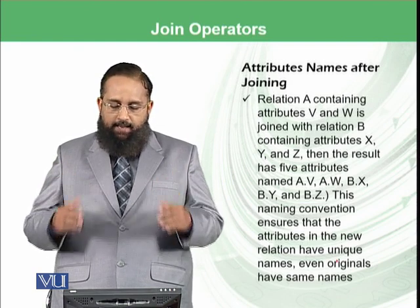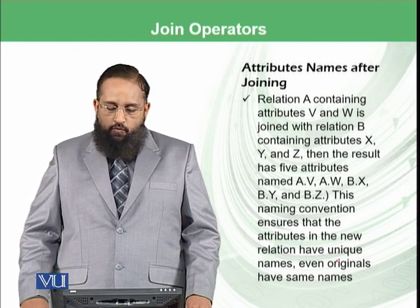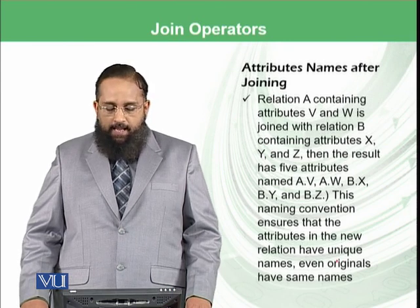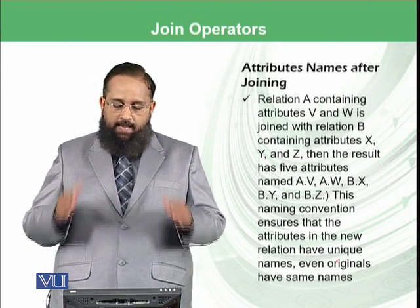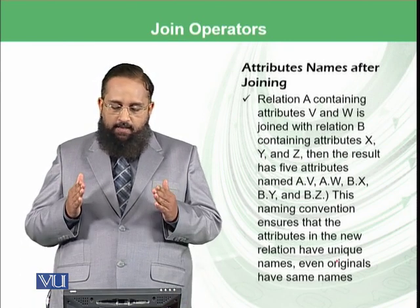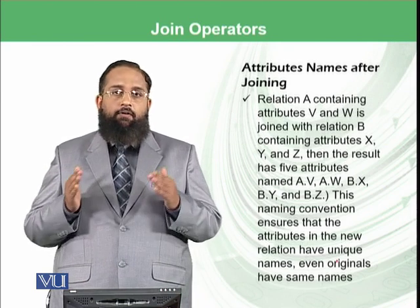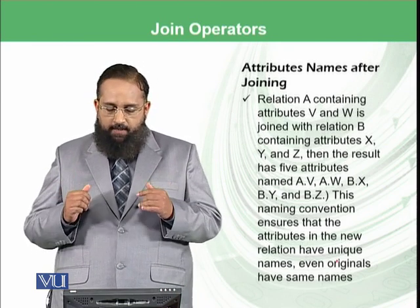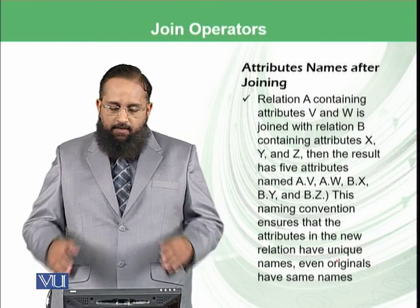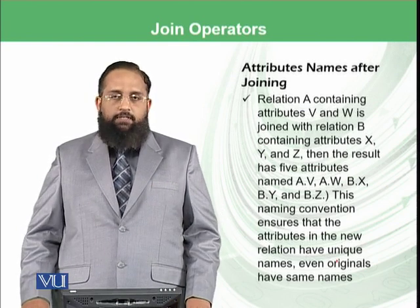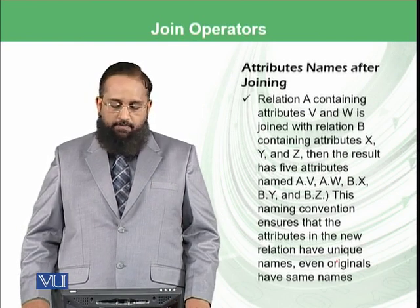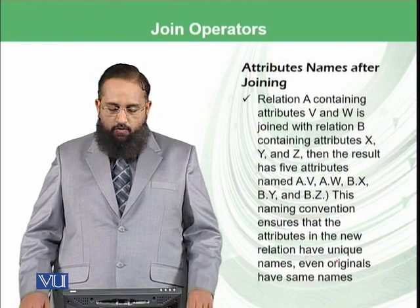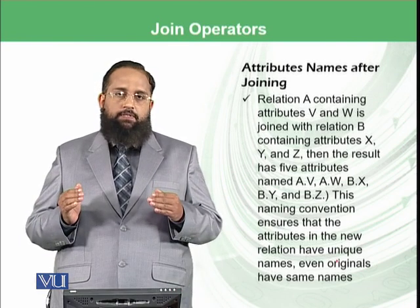then as a result, the new relation will have five attributes and the names of those attributes would be A.V, A.W, B.X, B.Y, and B.Z. This naming convention ensures that the attributes in the new relation have unique names, even if the originals have the same names.